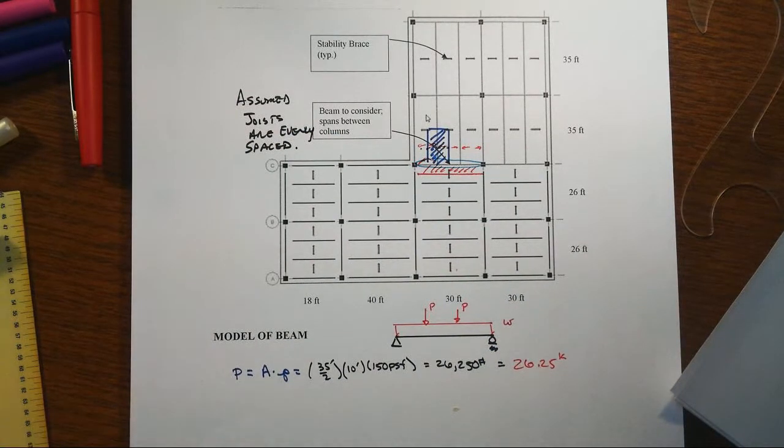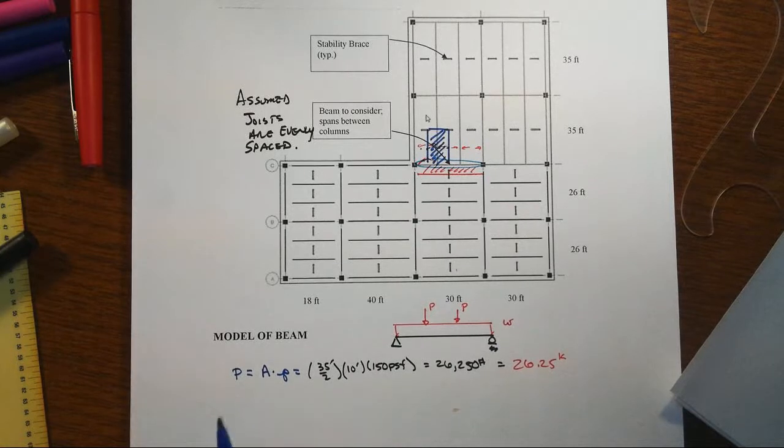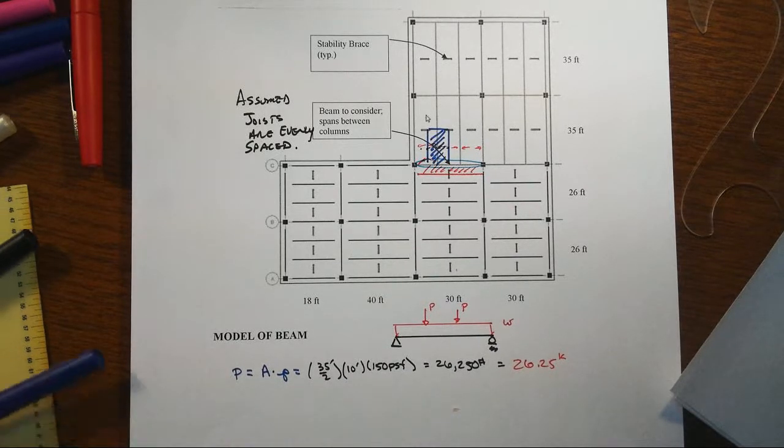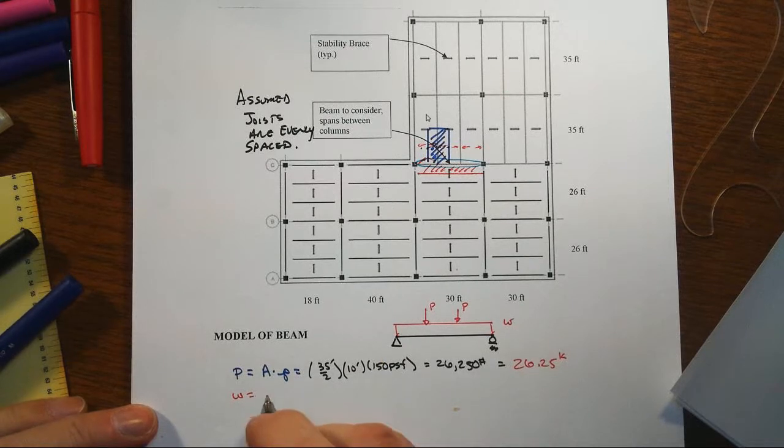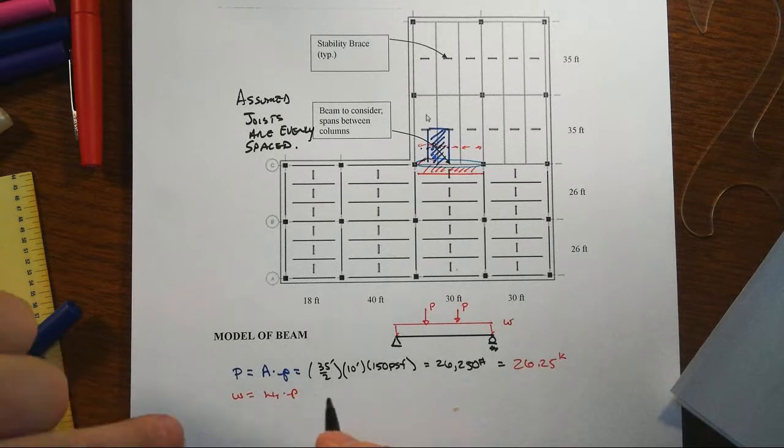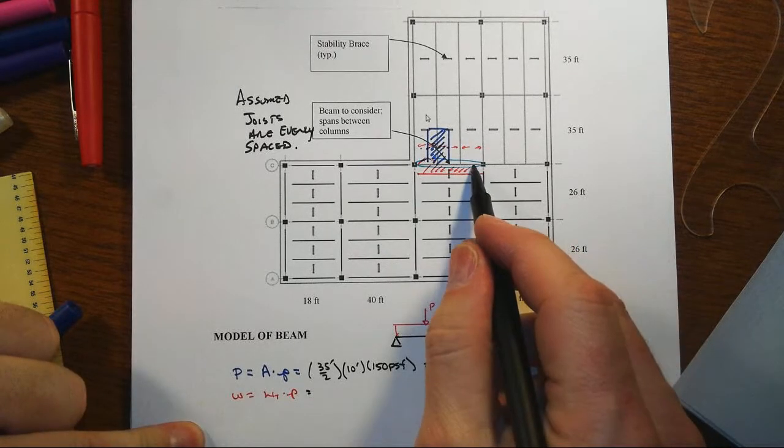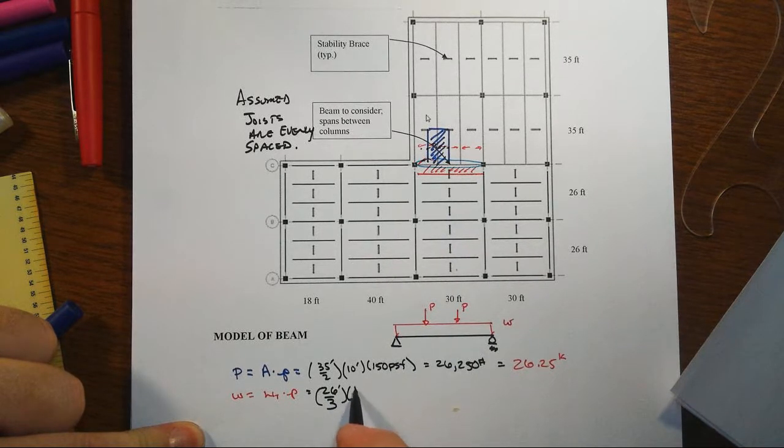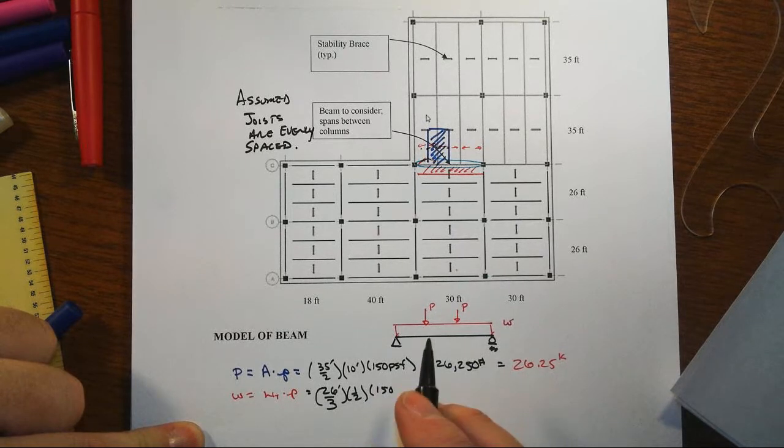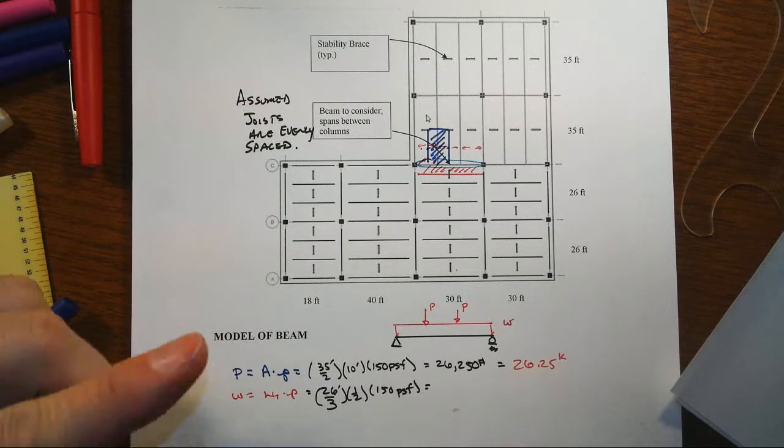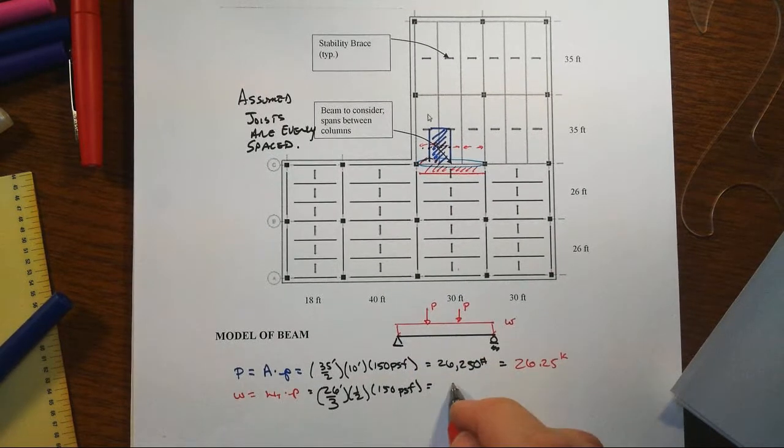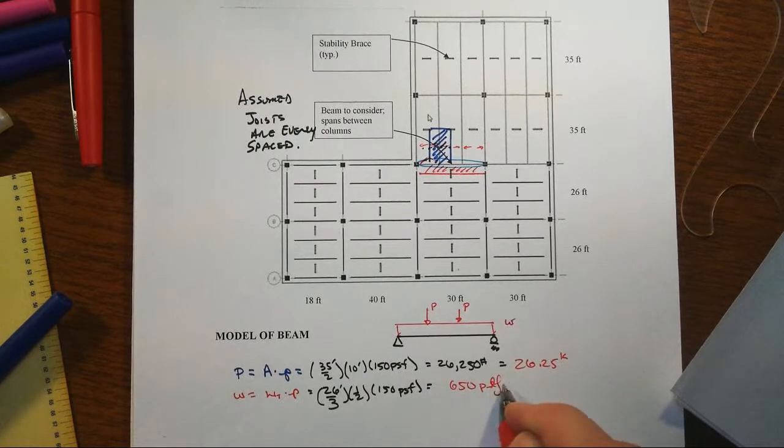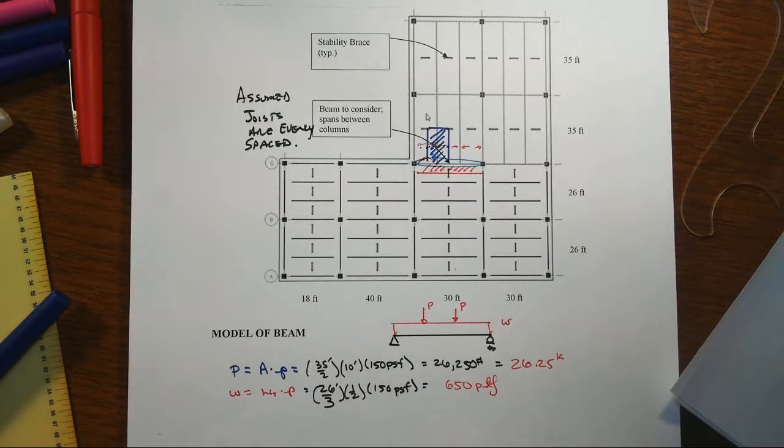Alright, so the last one then is to go get the W. That W will come from our tributary width times this pressure that's on the floor. And our tributary width is, well, three spaces—that's 26 feet divided by three—but we only have one half of that space, and then times 150 PSF. And that should turn out to be 650 pounds per foot. So quite a bit smaller effect as compared to the concentrated force.